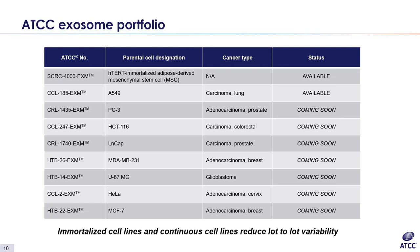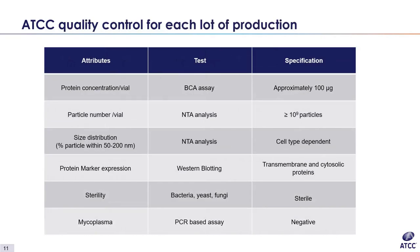Currently, the exosomes from hTERT MSCs and A549 are already available for purchase, and the rest are coming soon. This slide shows all the QC tests performed on each lot of exosomes, repeated on our certificate of analysis. We evaluate protein-equivalent concentration using a standard BCA assay, particle concentration through nanoparticle tracking analysis, and report the exact number of particles per vial. We also evaluate size distribution and report the percent of particles within 50 to 200 nanometers. We evaluate multiple exosomal protein markers — both transmembrane and cytosolic — through western blotting, and perform sterility and mycoplasma tests. Once all QC criteria are fulfilled, we release the lot for sale.